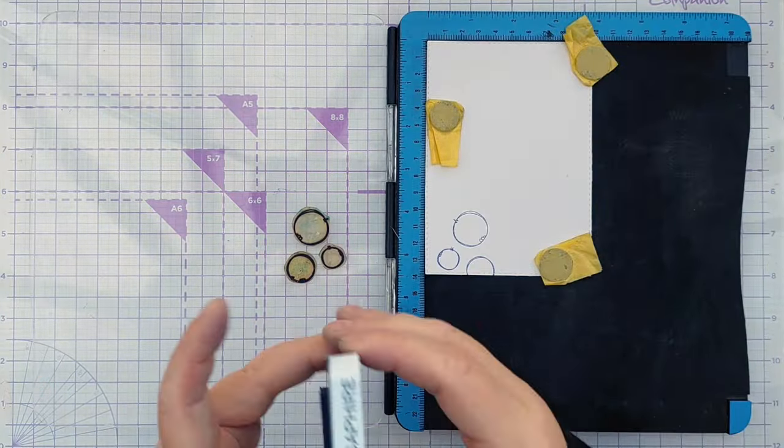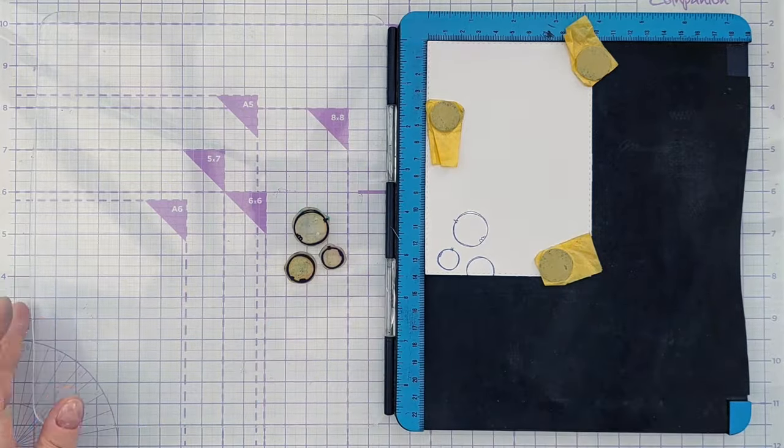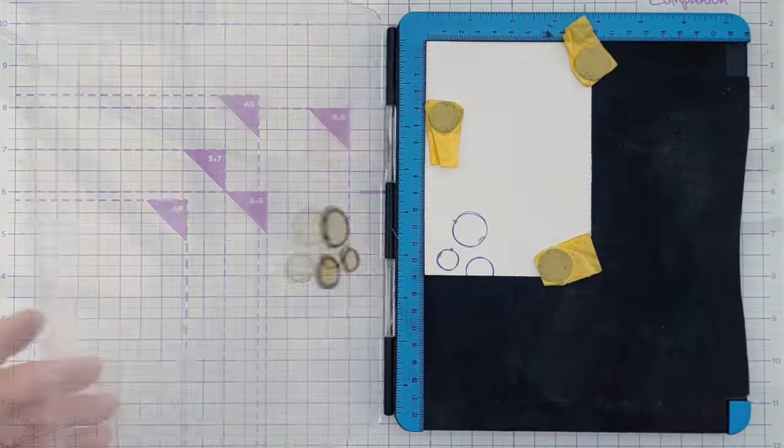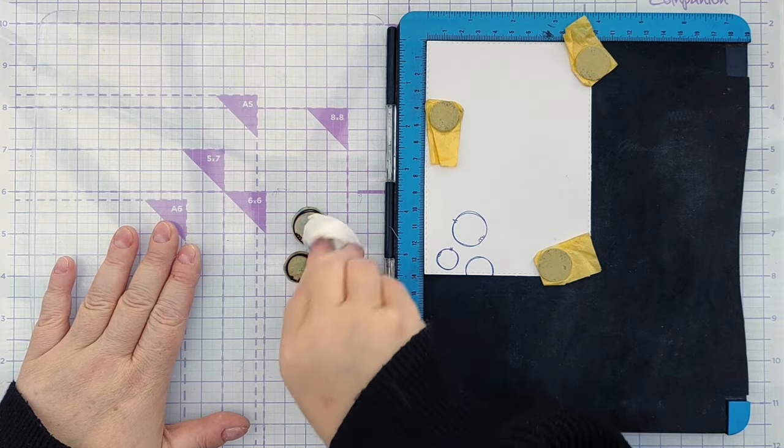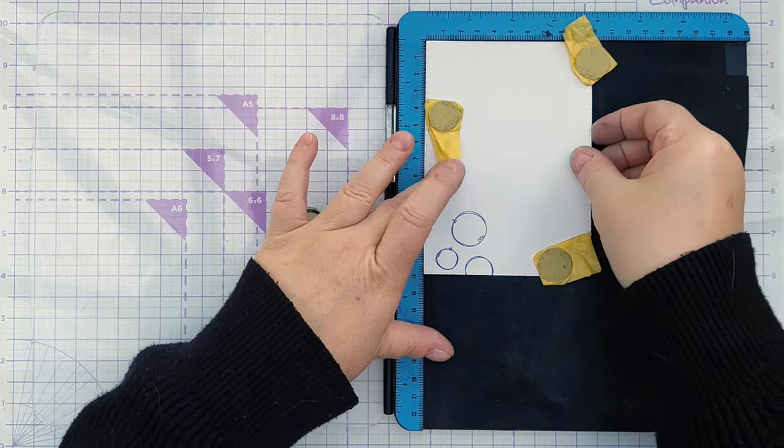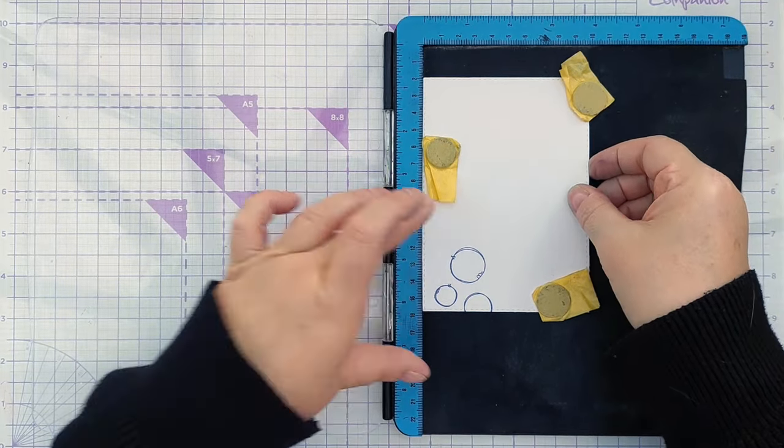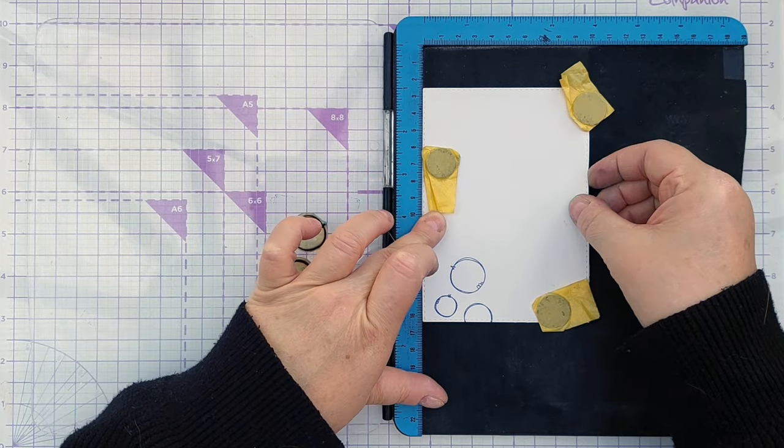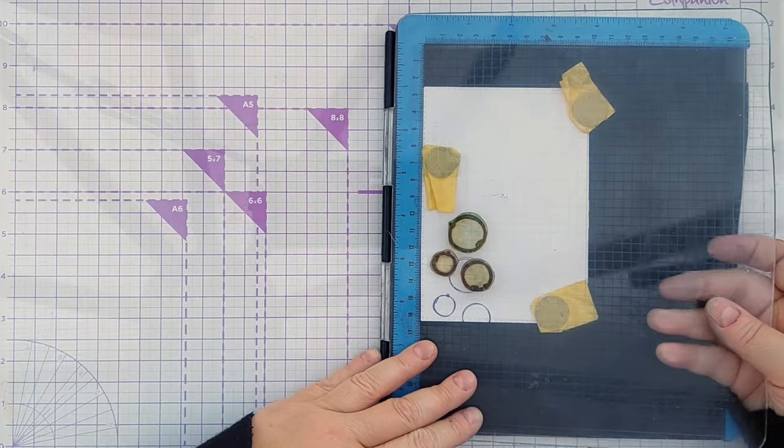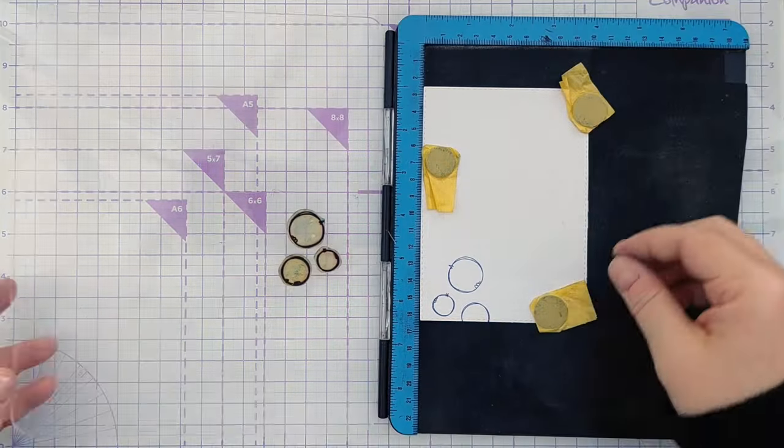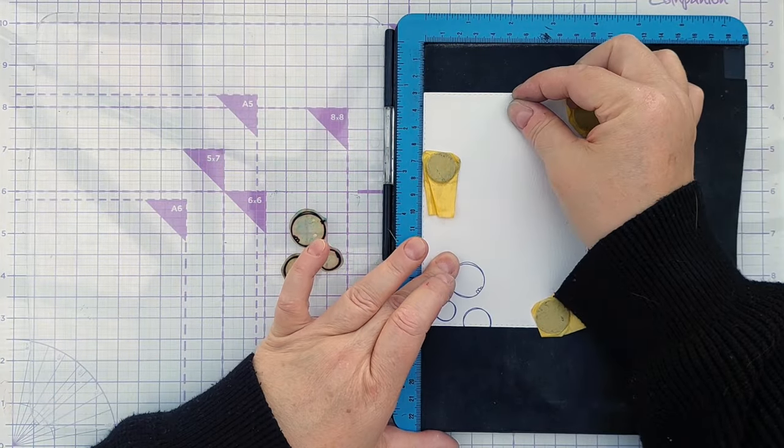Might do that a couple of times. I'm going to clean that off and shuffle my card down, maybe two and a half centimetres. Let's have a look. So there's a bit of overlap. Maybe three, I think. Three centimetres.